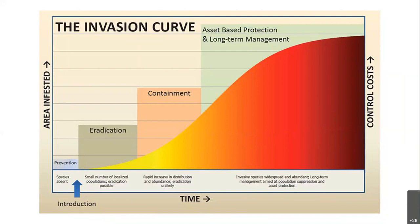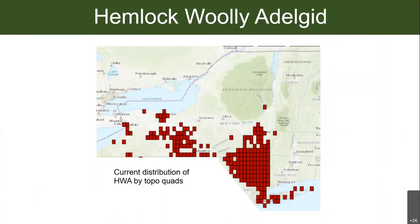It turns out that how we best manage invasive species depends on where they are in the invasion curve. If a species is not here yet, we focus on prevention. If it's here but in very small clumps, we might still eradicate it. If it's widespread in some regions but not others, we want to contain it. So in order to strategize how we deal with invasive species, we really need data on their current distributions. Here's a distribution map of hemlock woolly adelgid by topo quad — in the north of the state we focus on prevention, in the south on long-term management, and statewide the priority would be containment.